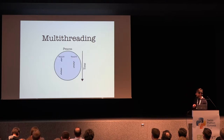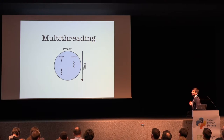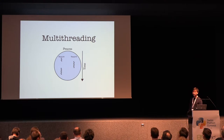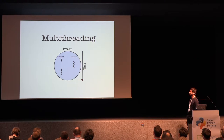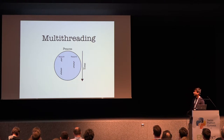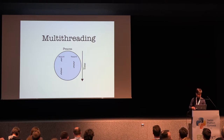This is how multi-threading looks in a single-core machine. If you have just one core, only one thread can run at a time. Thread one runs and stops, allowing thread two to run, then thread two stops and thread one runs. This is a little example of how it looks on a single core.